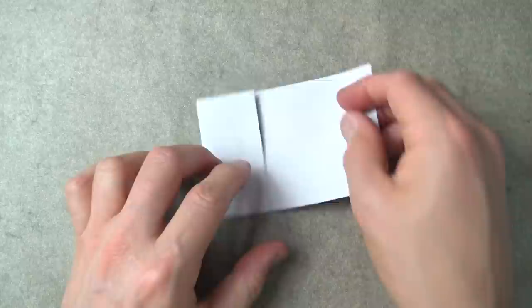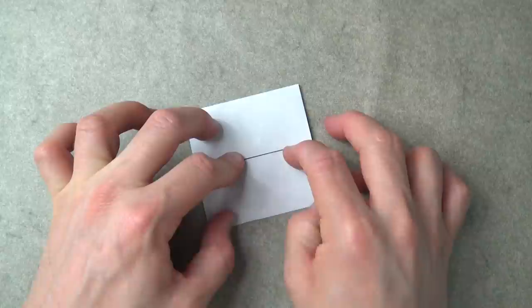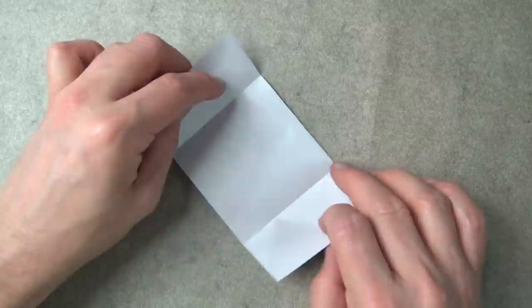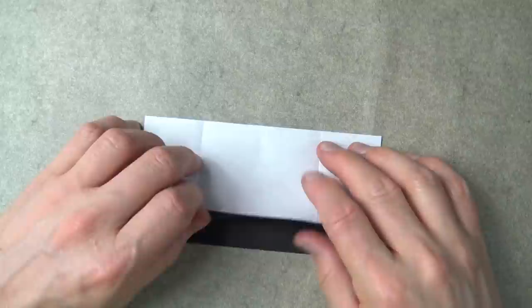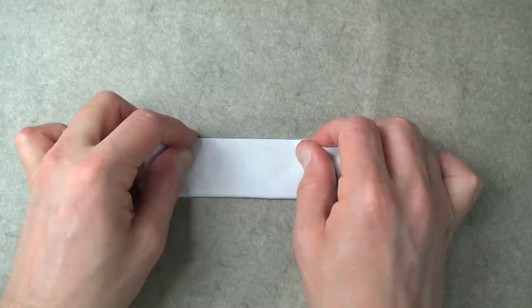Rotate and fold this flap to here, and unfold. Now fold these two flaps up to the top. Hold them together so they don't slide. Now fold this flap on this crease.